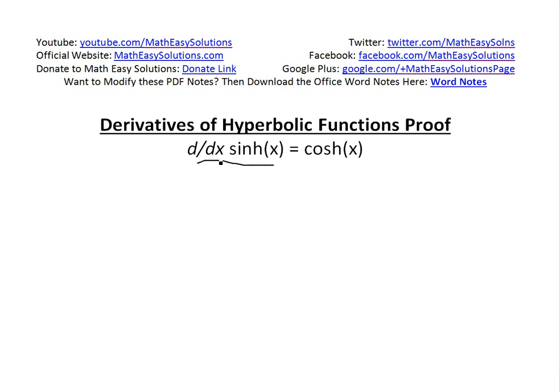To do this we have to use the definition of sinh, or hyperbolic sine, which is, let's say y equals sinh of x, and this just equals by definition e to the power of x minus e to the power of negative x all divided by 2.